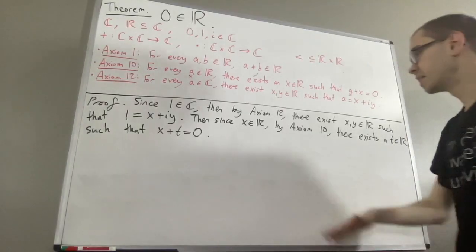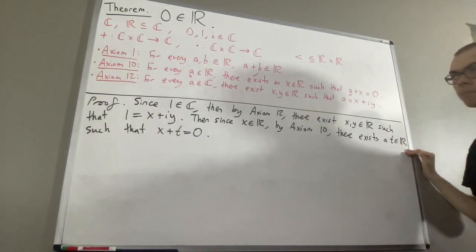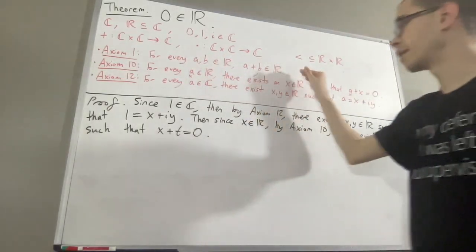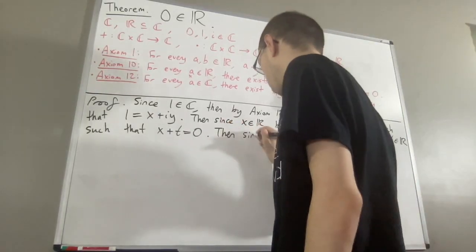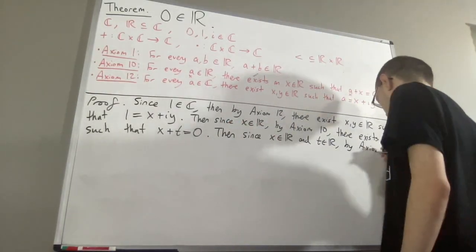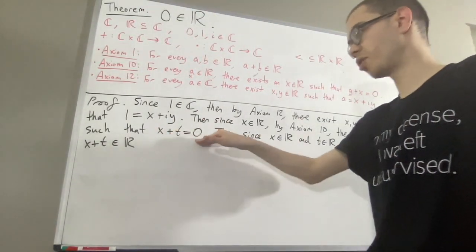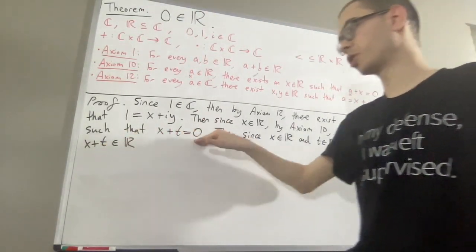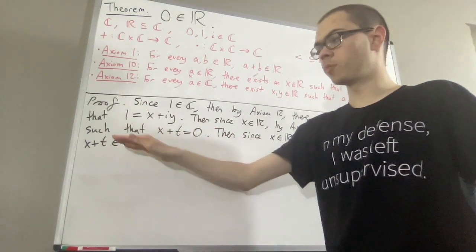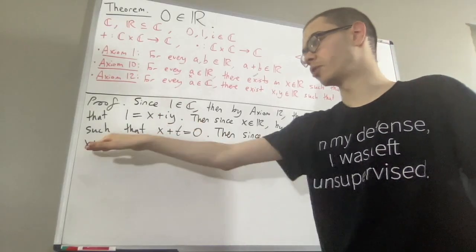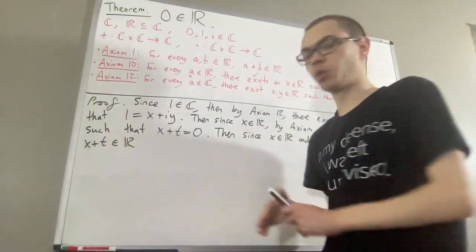But then, since X is a real number, and T is a real number, axiom 1 tells us that X plus T is a real number. But, since X plus T is equal to 0, we can substitute X plus T for 0, so 0 is a real number. We're assuming that the usual laws of equality hold. So, we're allowed to substitute X plus T for whatever it's equal to. So, 0 is a real number.